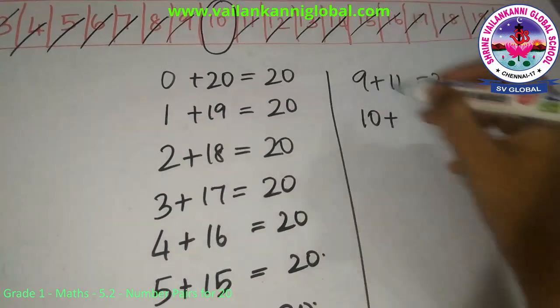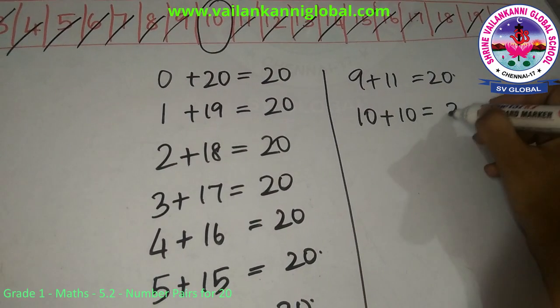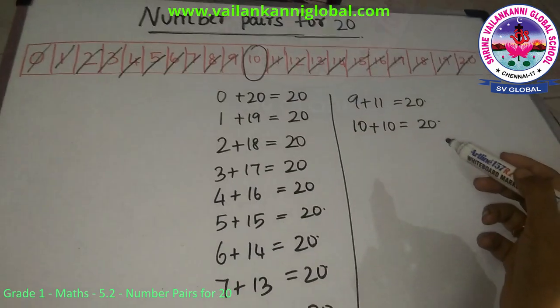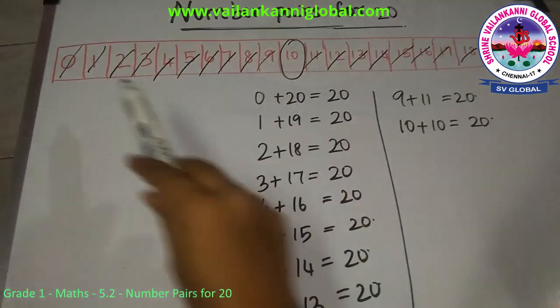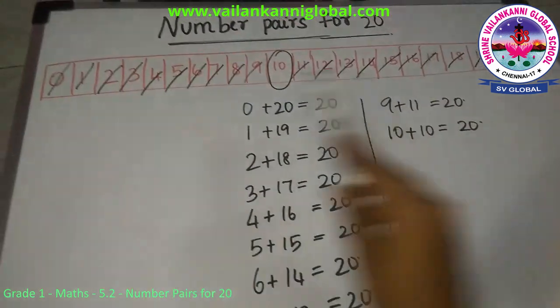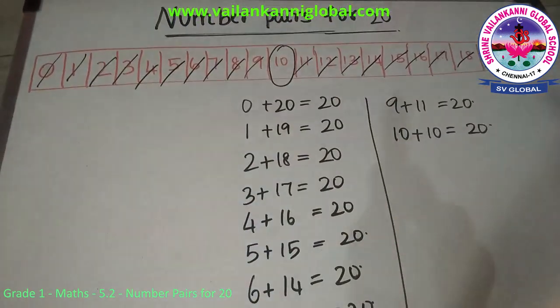In this way we can find out the number pairs for 20. We have to write numbers from 0 to 20, then we have to just make a pair.